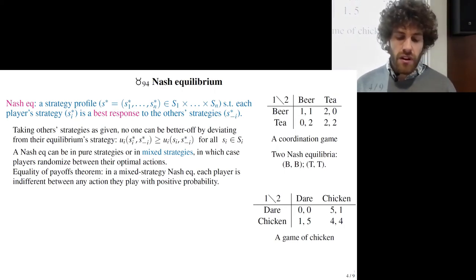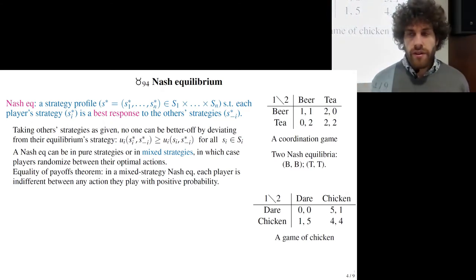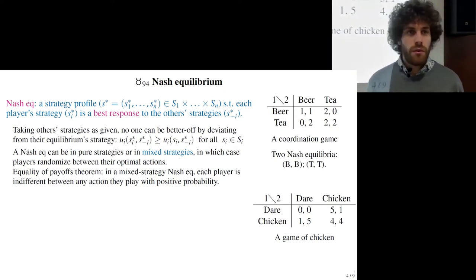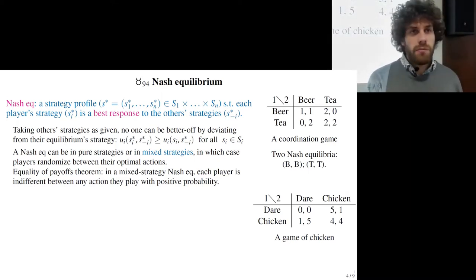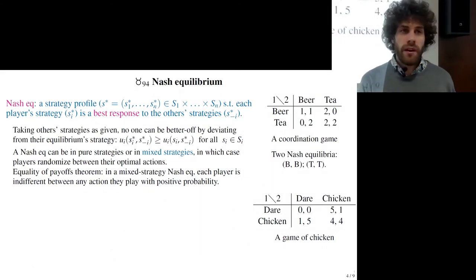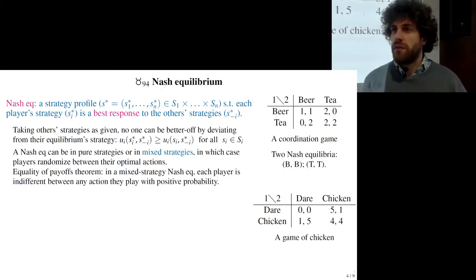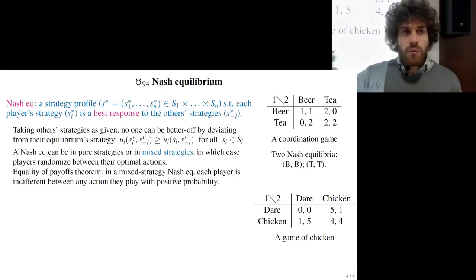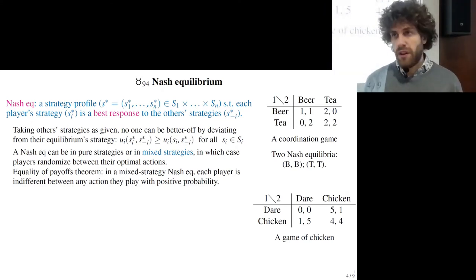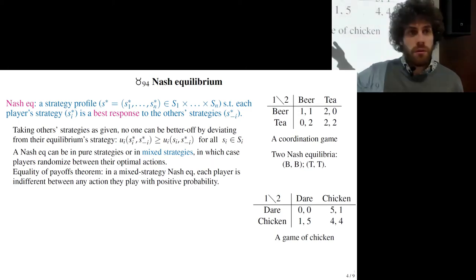In the case of a mixed strategy, there is an equality of payoff theorem that says each player will be indifferent between any action they can play. So in my example: heads I play beer, tails I play tea — meaning that given what the other plays, I am indifferent between beer or tea. It's important that I flip a coin and don't choose one over the other, because the other player relies on the fact that I will mix. And the reason I'm indifferent is because the other players are mixing.